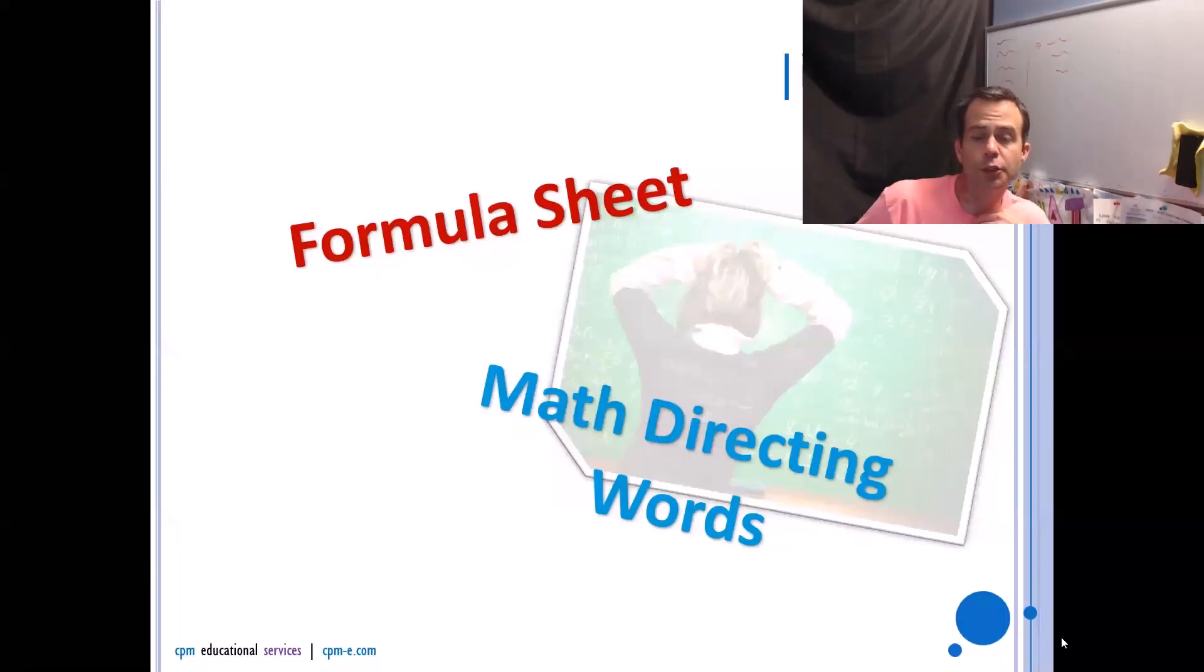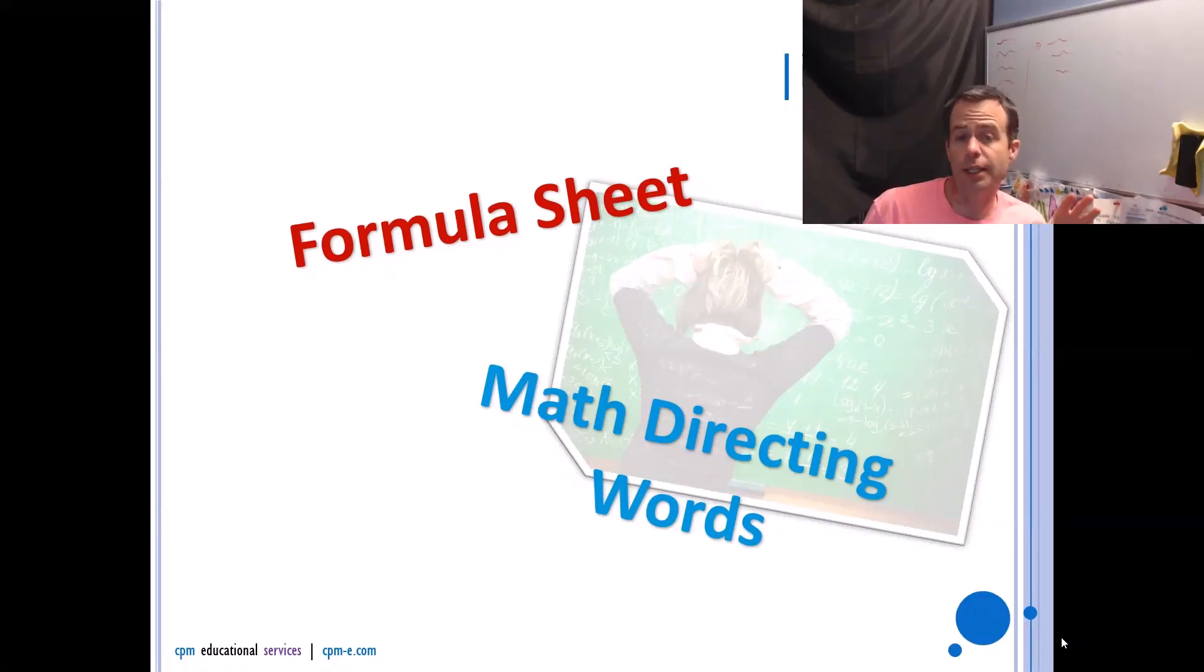So in your package, you will find right around here, a formula sheet and the math directing words. I had only given you three of those math directing words, but they're all right there as is your formula sheet. So as we go throughout the evening together, you're going to want to make sure you've got those handy. So maybe just dog ear them or whatever, so that you know where they are so that you can refer to them again.